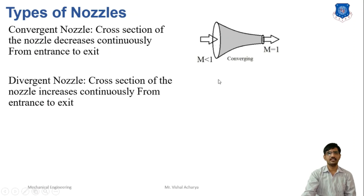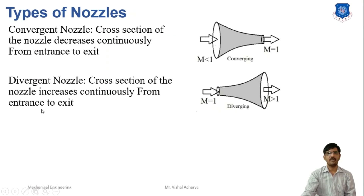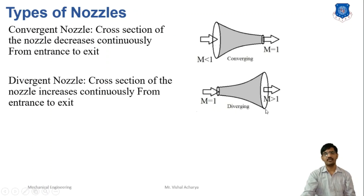Next is the divergent nozzle. The divergent nozzle has a cross-section that increases continuously from entrance to exit. At the throat condition, sonic flow enters and expands in the divergent section. Here, heat energy is converted further into kinetic energy. Therefore, in the divergent portion, the flow is always supersonic, meaning the Mach number is greater than 1.